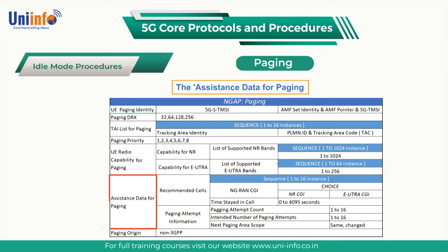The assistance data for paging can be used to provide a list of recommended cells. This list can include cells which the UE has previously visited and cells which the UE has not previously visited. In the case of previously visited cells, the AMF specifies the time that the UE spent in each cell.